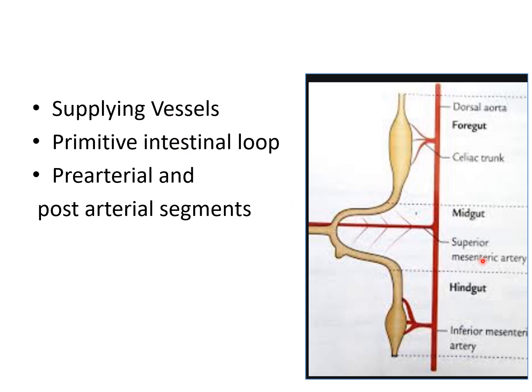The superior mesenteric artery supplies the branches of the primitive intestinal loop. The pre-arterial (cranial) segment gives rise to the second, third, and fourth parts of the duodenum, jejunum, and most of the ileum. The post-arterial (caudal) segment gives rise to the cecum, ascending colon, and half of the transverse colon. The cecal bud is a diverticulum arising from the post-arterial segment. The proximal part of this bud grows rapidly to form the cecum, while the distal part remains narrow to form the appendix.